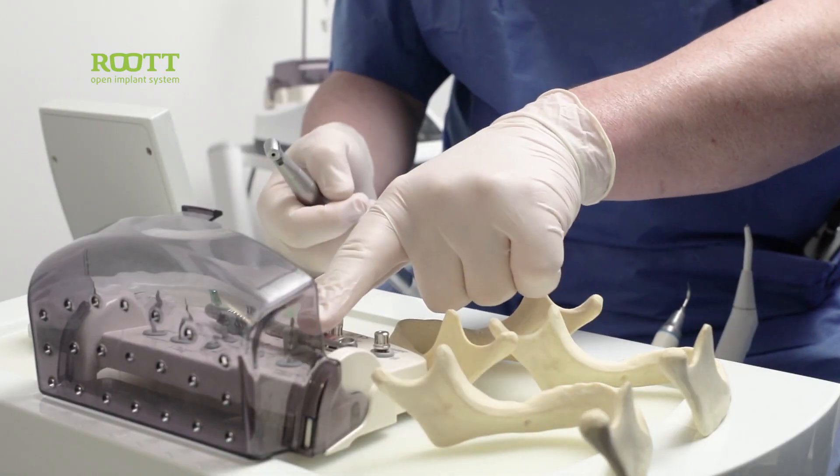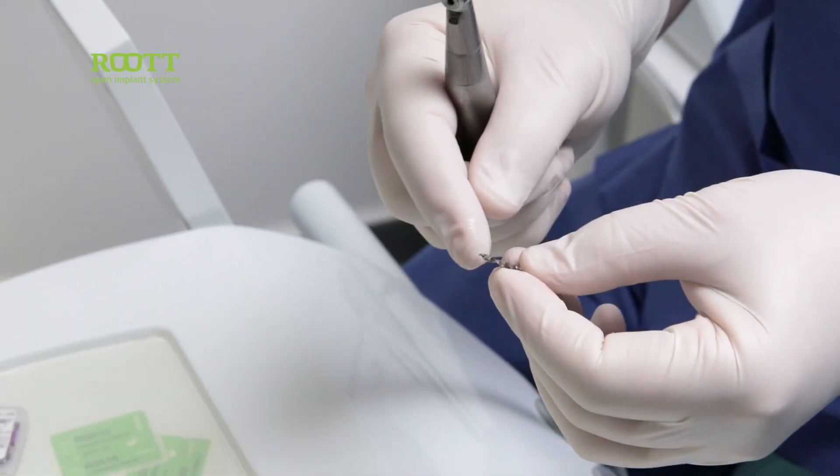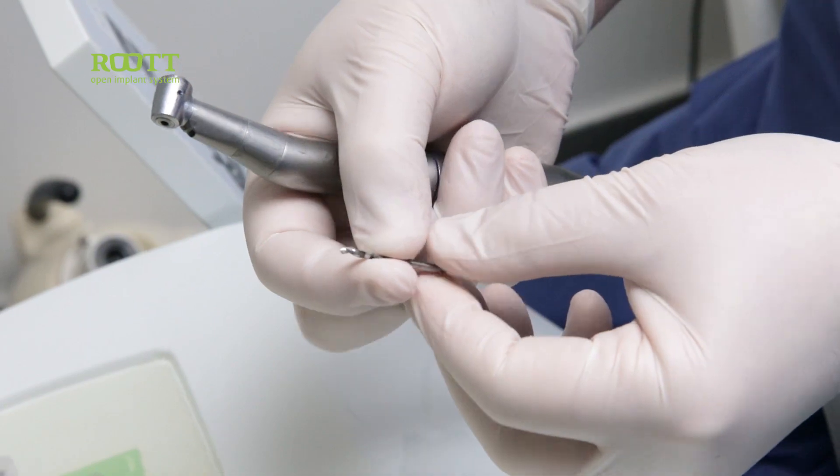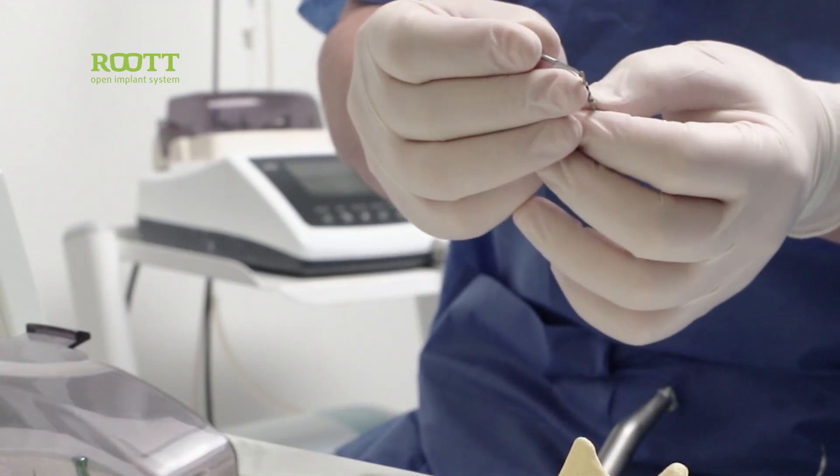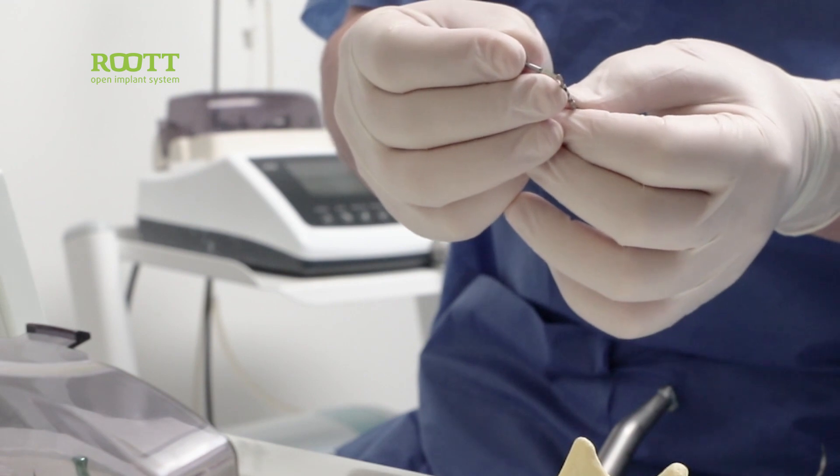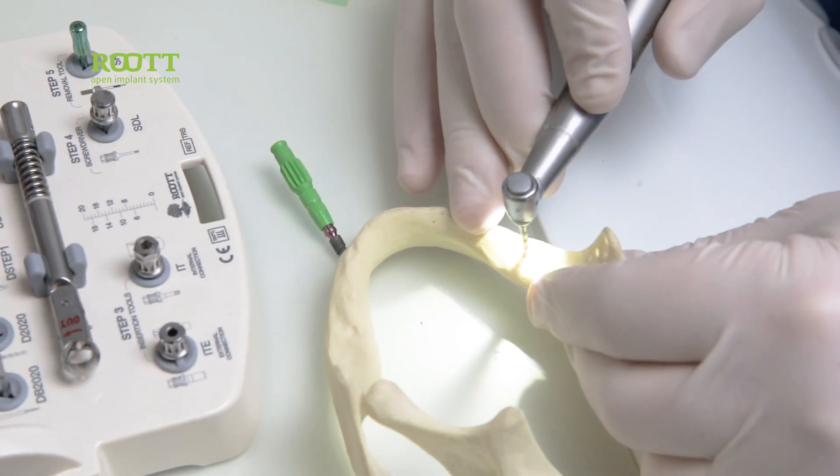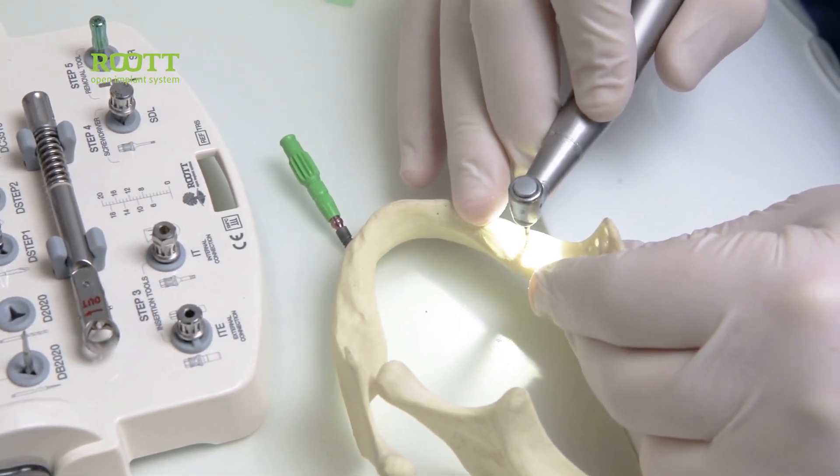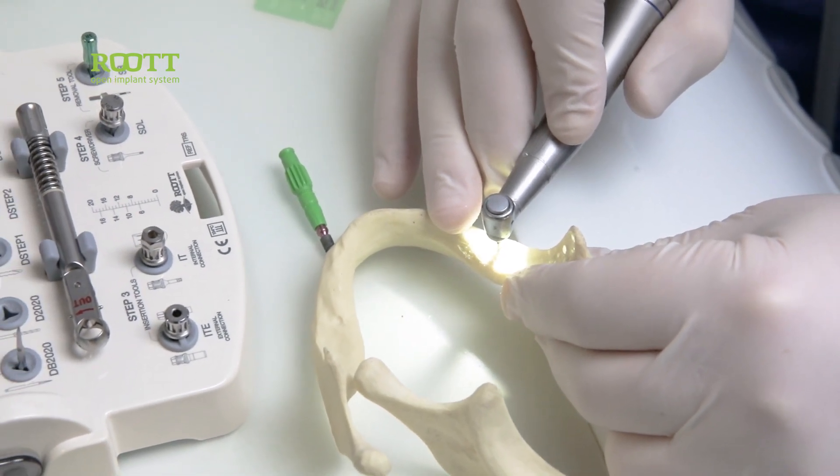Then we use the pilot drill, the second one which has laser marks. We are going to go to 12mm. These laser marks, the first one is 6, 8, 10, and 12. We go to 6, 8, 10, and here we arrive to 12mm, we go out.